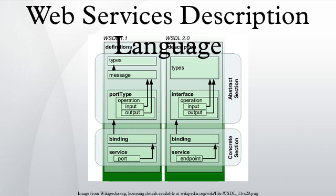WSDL 1.2 was a working draft at W3C, but has become WSDL 2.0. According to W3C, WSDL 1.2 is easier and more flexible for developers than the previous version. WSDL 1.2 attempts to remove non-interoperable features and also defines the HTTP 1.1 binding better. WSDL 1.2 was not supported by most SOAP server vendors. WSDL 2.0 became a W3C recommendation in June 2007.